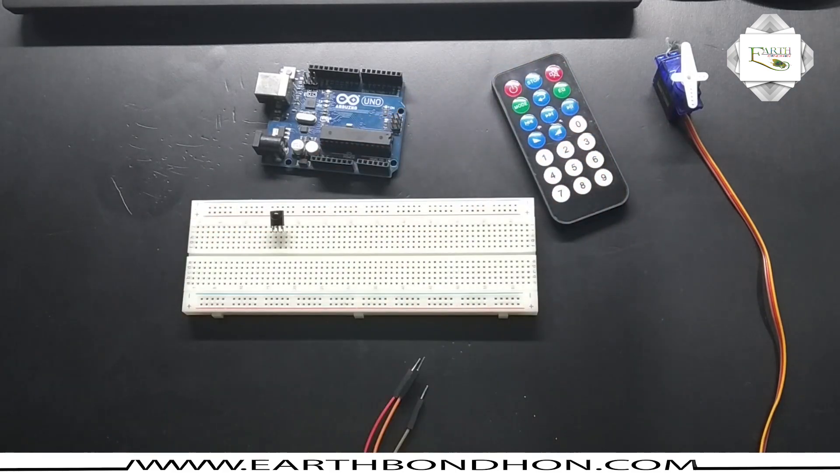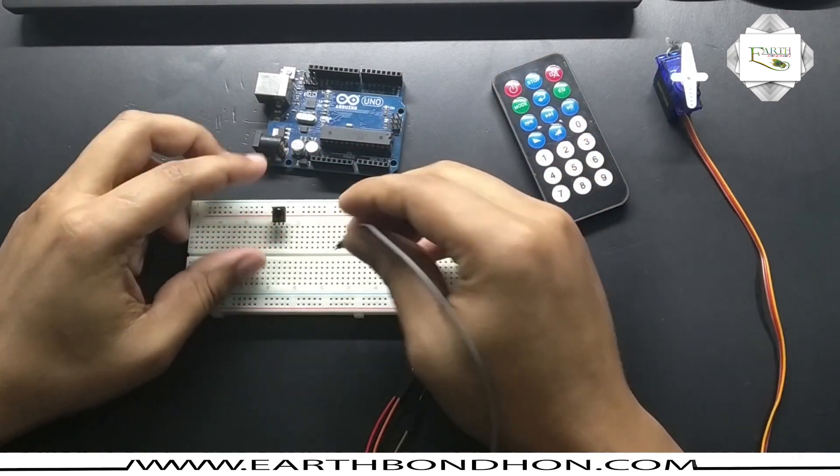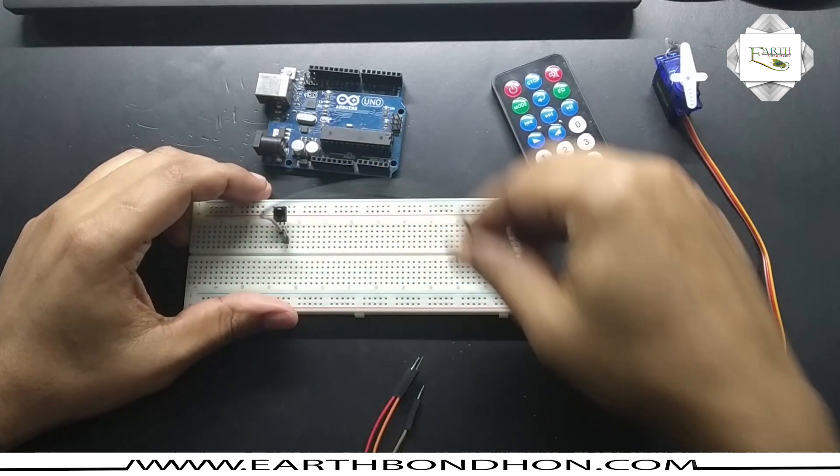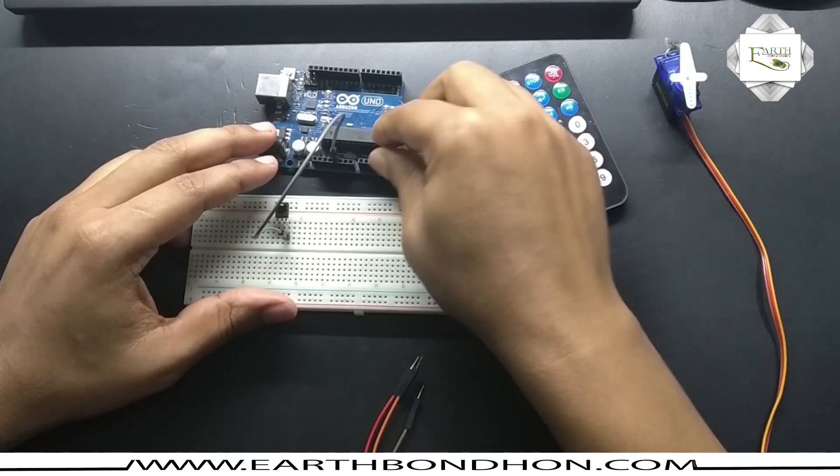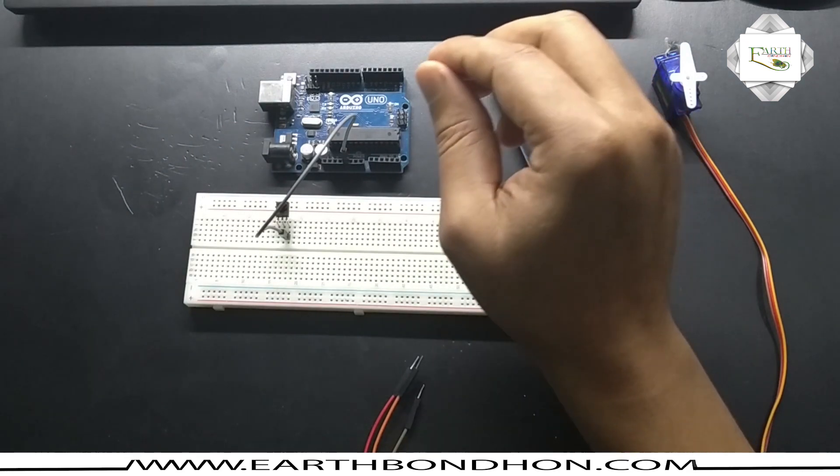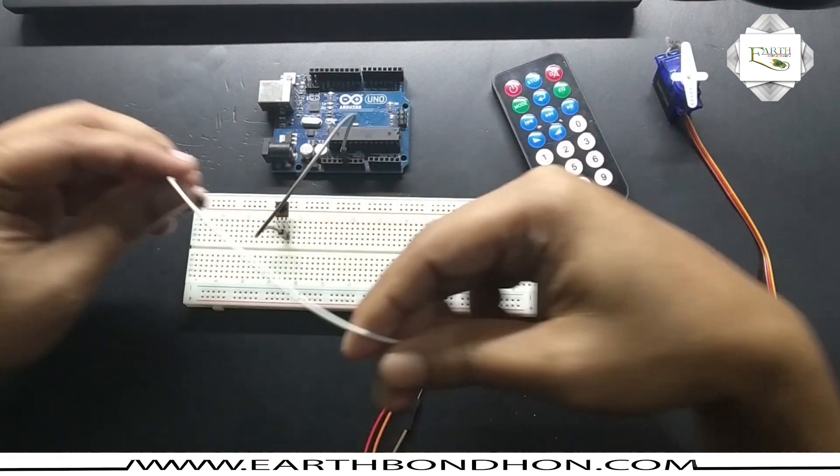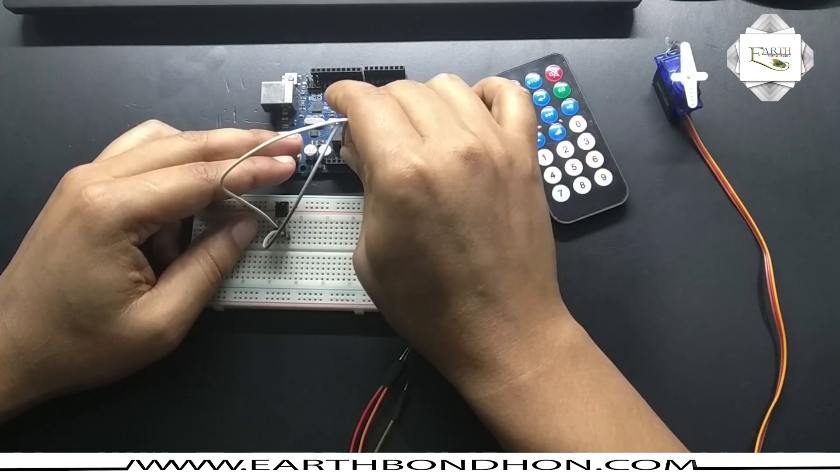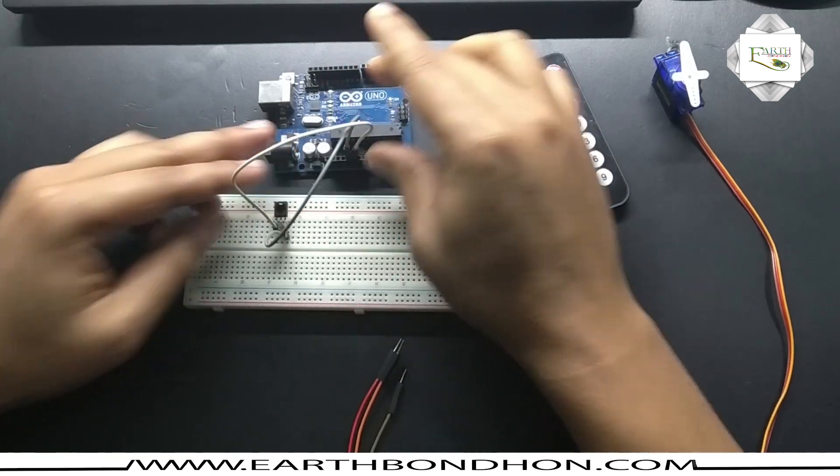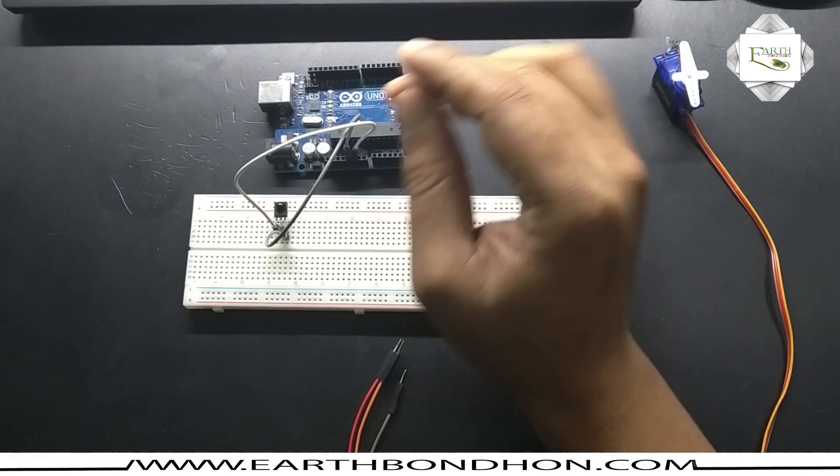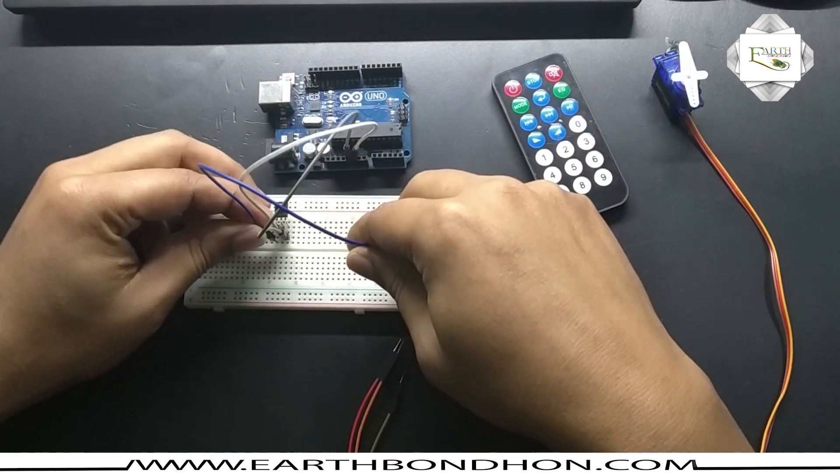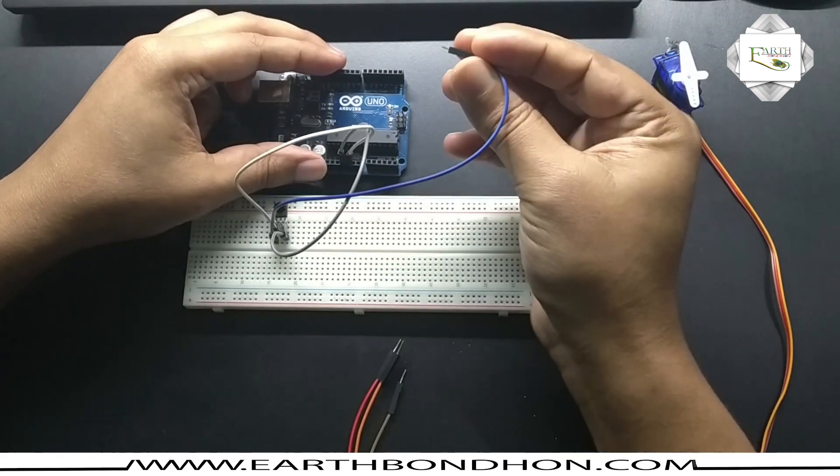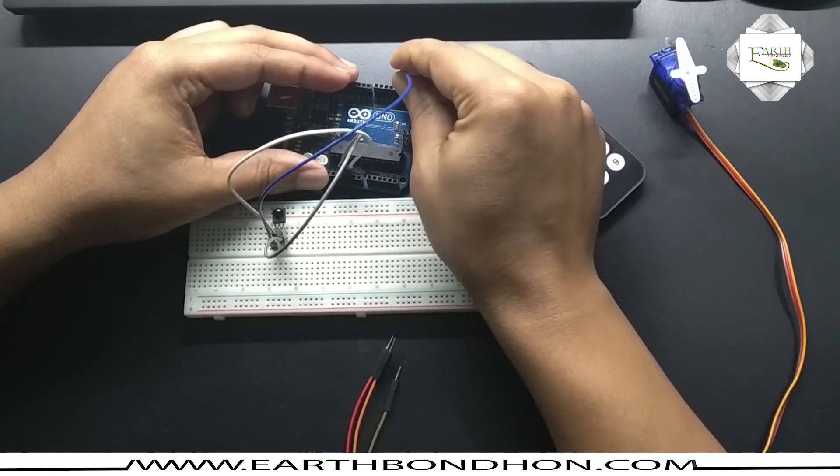Connecting the IR sensor: terminal number three is VCC, five volts. Pin number two is ground, and pin number one is the output of the sensor. This output is connected to Arduino digital pin three.